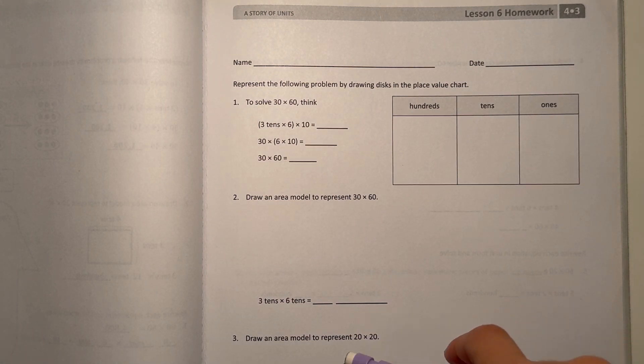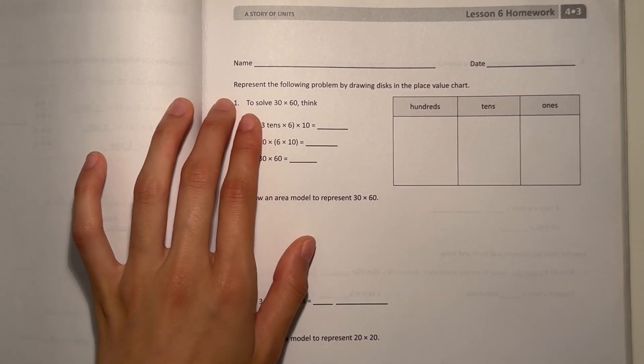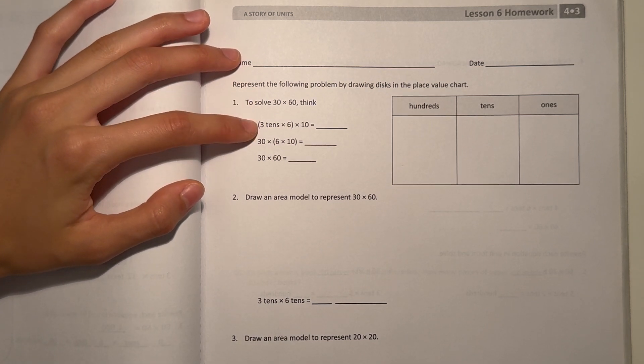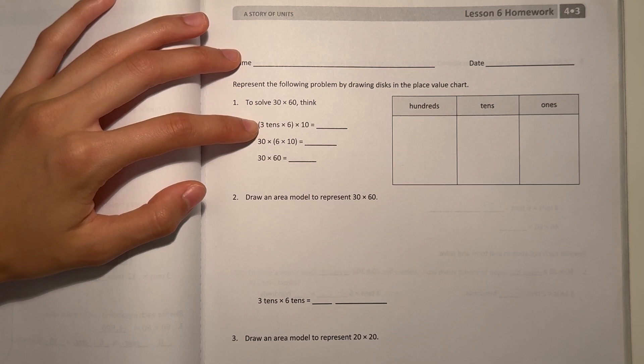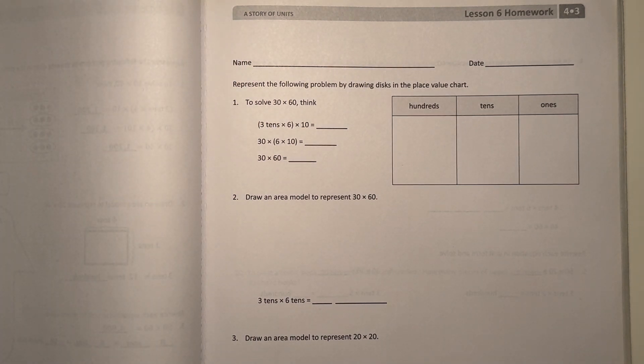Represent the following problem by drawing disks in the place value chart. So number one, we have to solve 30 times 60. Think 3 tens times 6, times 10. So we're breaking apart the number to multiply the 30 and the 6 first, and then multiply by 10 at the end.